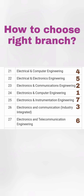Moving to the Electrical and Electronics group, there are many options with similar-sounding names. Electronics and Computer Engineering is ranked first as it combines electronics and computers. Electronics and Communication Engineering (ECE) is ranked second — it is the regular branch. Third is a new industry-integrated Electronics and Communication branch with VLSI, which is also a good option.